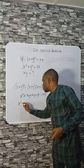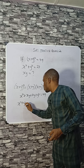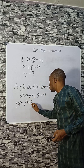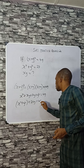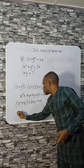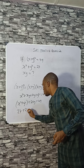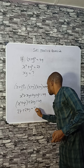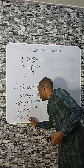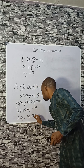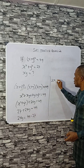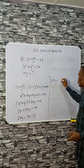So x² + y² + 2xy = 49. But x² + y² is 27, so substituting: 27 + 2xy = 49. Making 2xy the subject gives 2xy = 49 − 27, which equals 22.